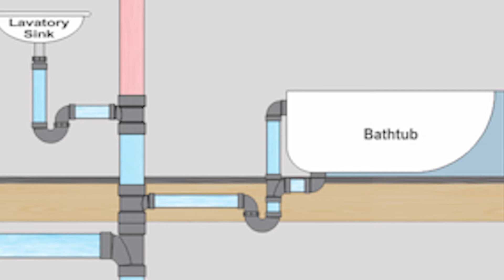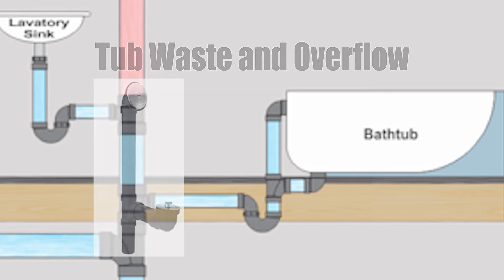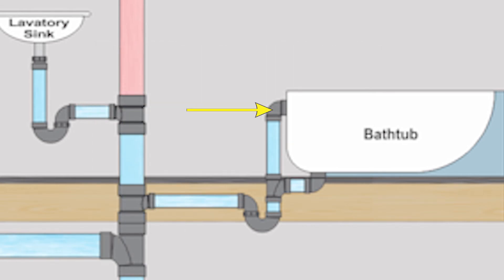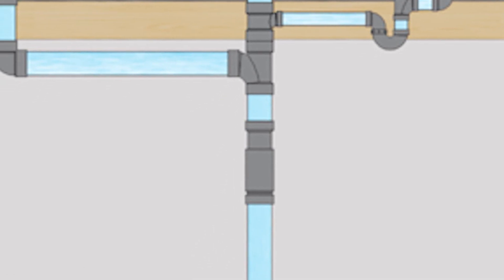The next piece doesn't come from the code definitions. Looking at the bathtub, there's a very interesting drainage connection — a pipe on the top side and a pipe coming from the bottom. This is called a tub waste and overflow. The bottom connection is the waste or drain; the top connection is the overflow, just in case the tub gets accidentally overfilled so it can drain from that point.